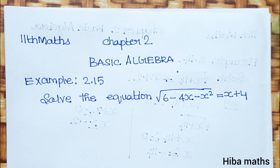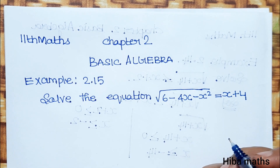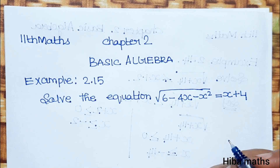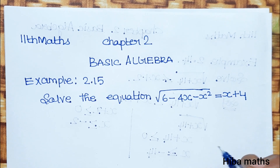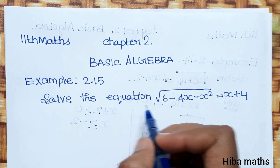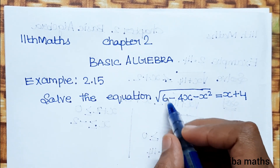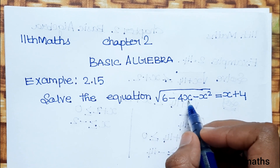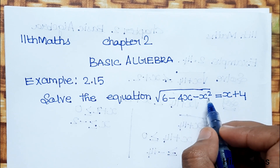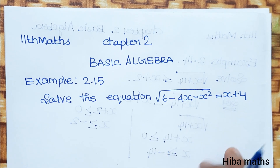Hello students, welcome to Hibamax 11, Standard Max Chapter 2, Basic Algebra Example 2.15. Solve the equation: the square root of 6 minus 4x minus x squared is equal to x plus 4.